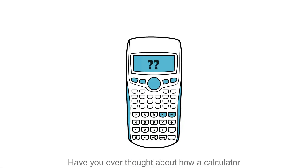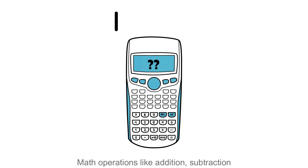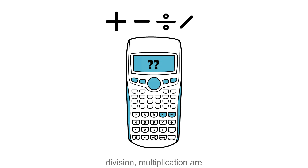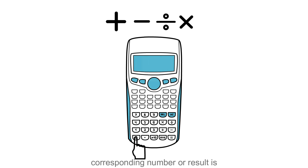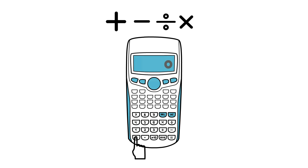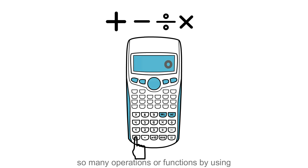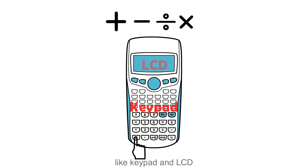Have you ever thought about how a calculator calculates a math problem? Math operations like addition, subtraction, division, multiplication etc. are carried out so easily by a calculator. When you press a button on the keypad, the corresponding number or result is displayed on the small display screen of the calculator. But how does such a small system perform so many operations and functions by using different devices like keypad and LCD?